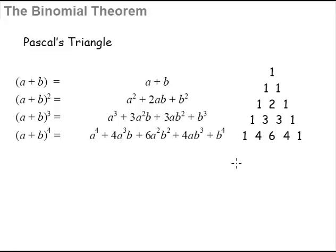Now, if we were to write down the coefficients of all these expansions, of all these terms, into the number form like this, in this case we have 1a and 1b, and therefore it's 1, 1. In this case, we have 1a square, 2ab, and 1b square, and that's how we get 1, 2, 1.